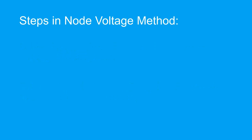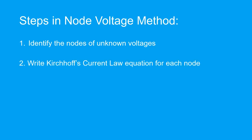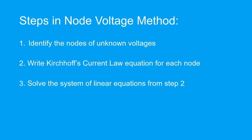The basic procedure in the node voltage method is: first, identify the nodes of unknown voltages. Secondly, write the Kirchhoff's current law equation for each node — this will give us a system of linear equations. Note that for it to be solvable, the number of equations must equal the number of unknowns. Lastly, solve the system of linear equations obtained from step 2.